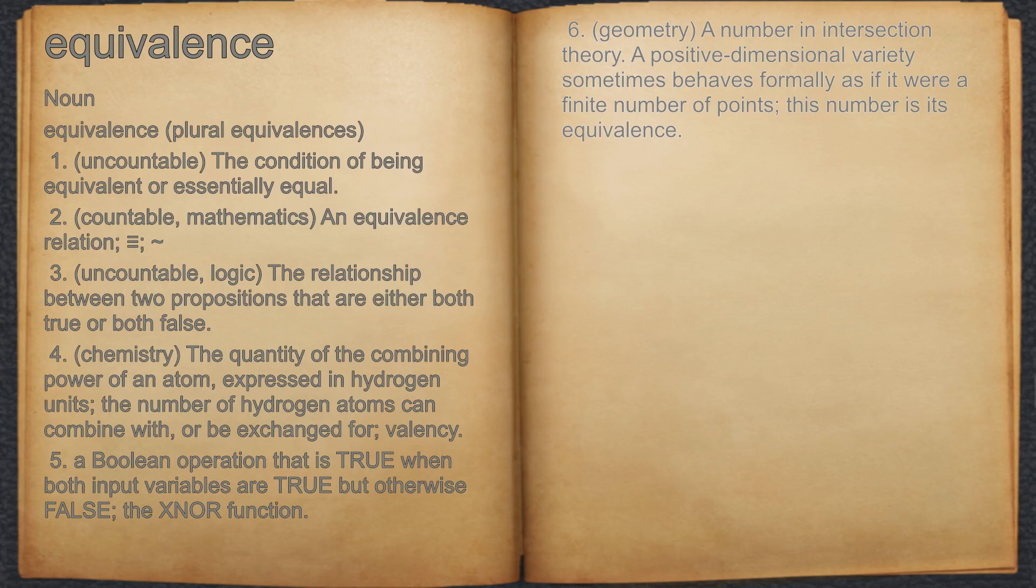6. Geometry: A number in intersection theory. A positive dimensional variety sometimes behaves formally as if it were a finite number of points; this number is its equivalence.